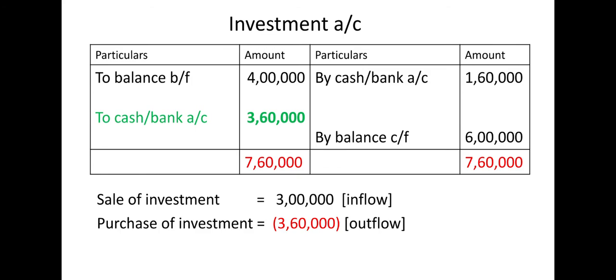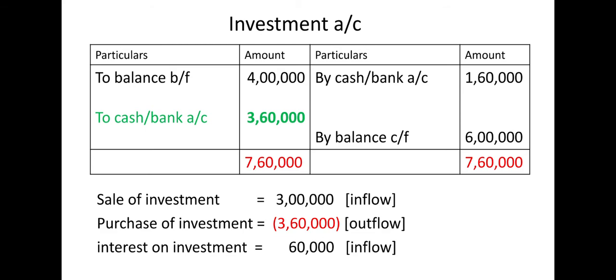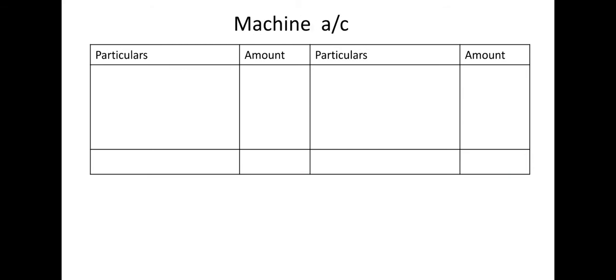Additionally, from the adjustments there is interest on investment. Interest on investment of 60,000 has been received — that is a cash inflow activity and we will record it. So these are the three investment-related transactions for the cash flow statement. Investment working is complete. Now machine account — comparatively easy, similar to the previous two illustrations.